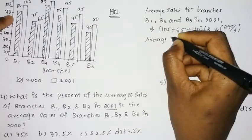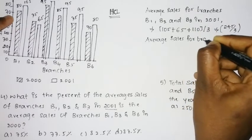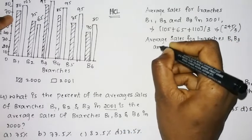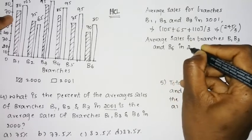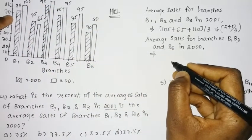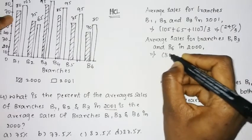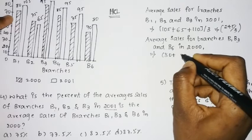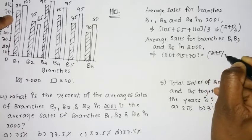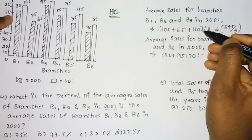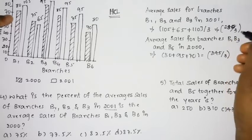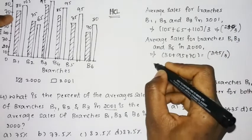Next, we find the average sales for branches B1, B3, and B6 in the year 2000. B1 is 80, B3 is 95, and B6 is 70. So we have 80 plus 95 plus 70 divided by 3, which gives us 245 divided by 3. Wait — this comes to 280 divided by 3 for the year 2000 average.